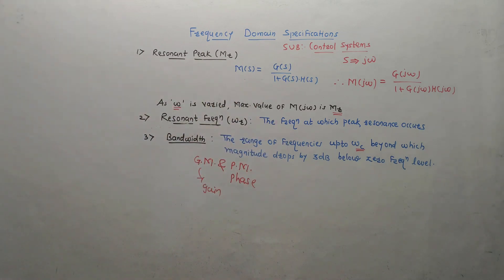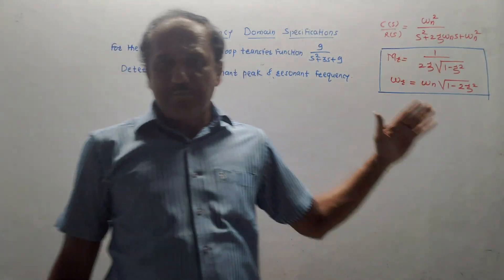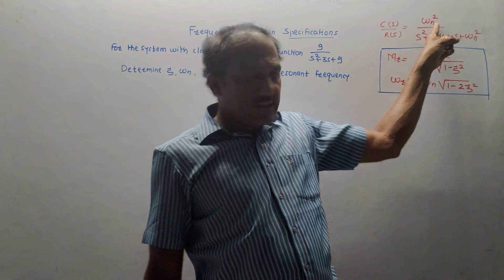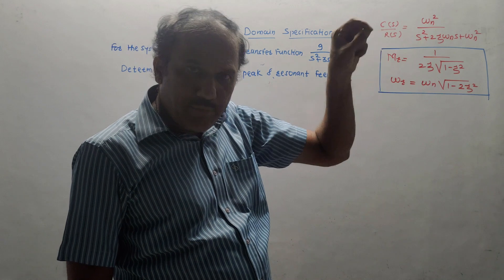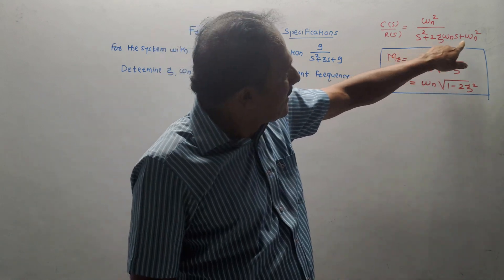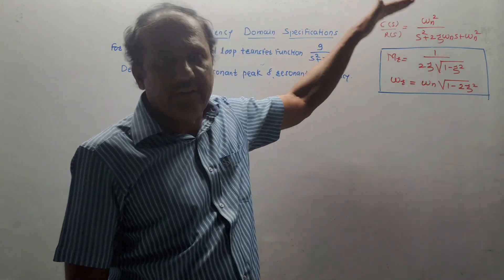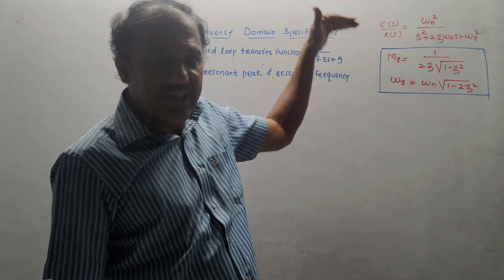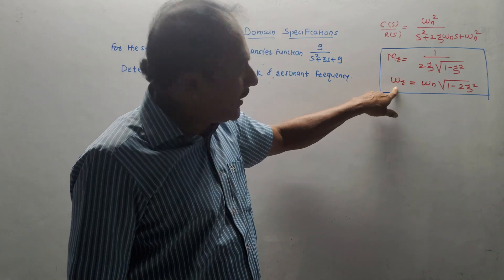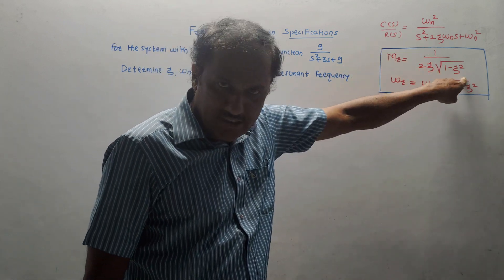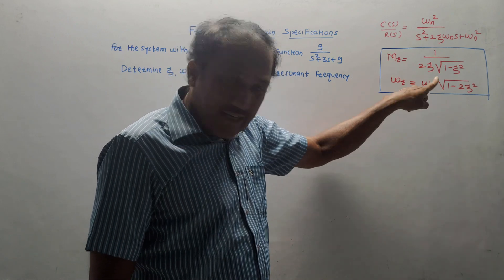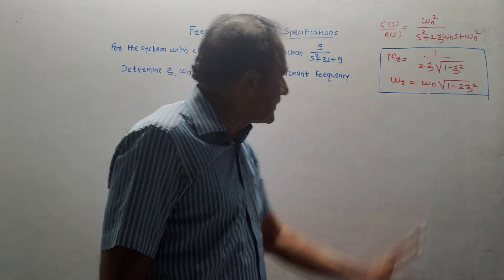Now let us start solving the numericals. For solving the numericals we need a simple set of formulae. The standard formula for transfer function in the time domain is C(s)/R(s) = ωn² upon s² plus 2ζωns plus ωn². Here ωn is the natural frequency of oscillation and ζ is the damping factor. We need two important formulae: Mr = 1 upon 2ζ√(1 − ζ²), and ωr = ωn√(1 − 2ζ²).